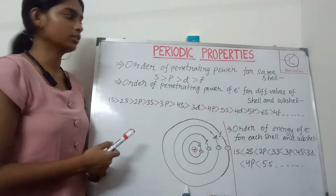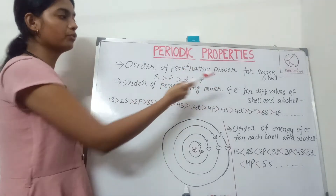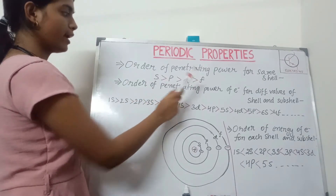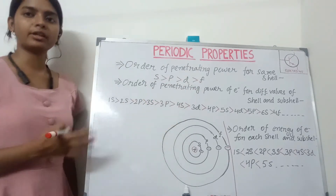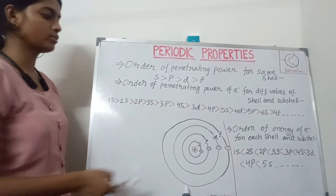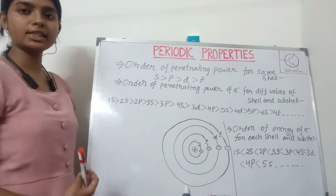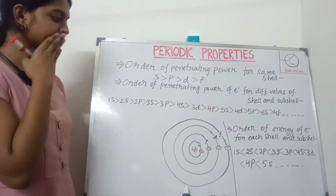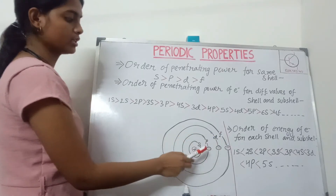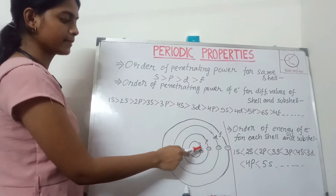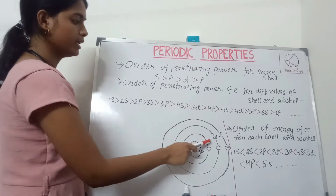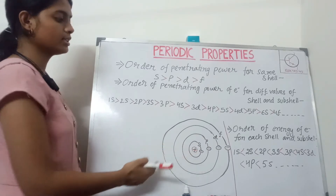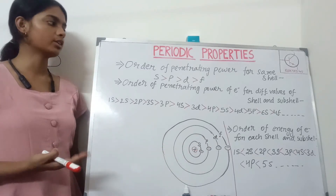So the order for penetration power of the orbitals is S > P > D > F — the penetrating power is decreasing in that order. The distance of each orbital from the nucleus is increasing in that same order: S is nearest, then P, then D, then F. So the attraction force on each orbital is decreasing, and that's why the penetrating power is also decreasing.